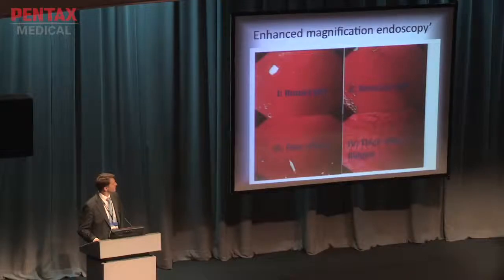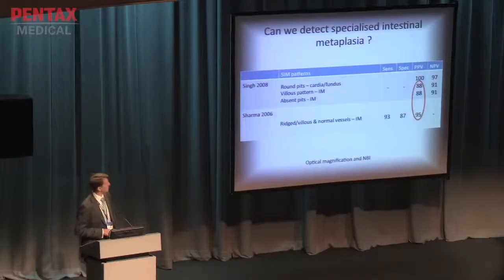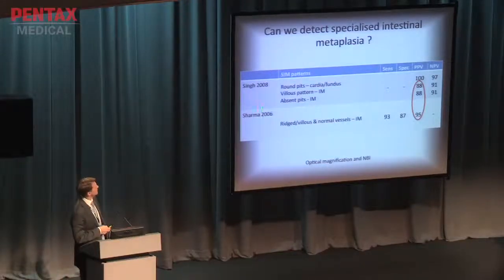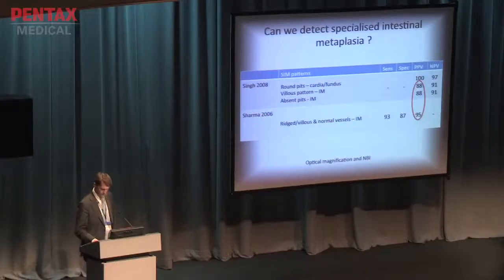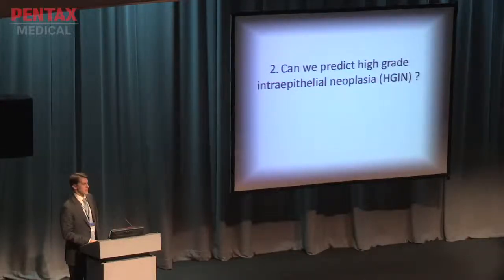There have been a few studies looking at the sensitivity of this classification system. The positive predictive values are around 90%, which isn't bad. Both systems used high-resolution endoscopy with magnification and MBI. So we're getting better at predicting intestinal metaplasia, providing we have the right tools — MBI, magnification endoscopy.